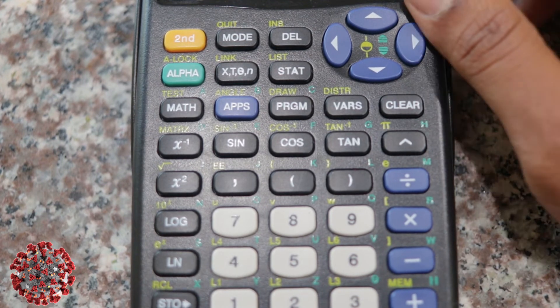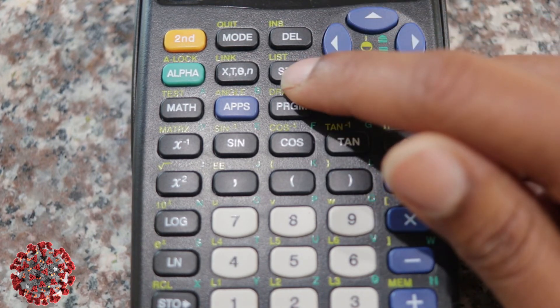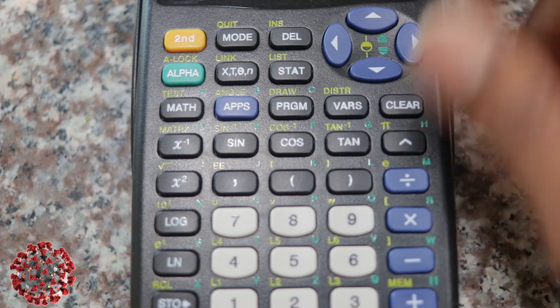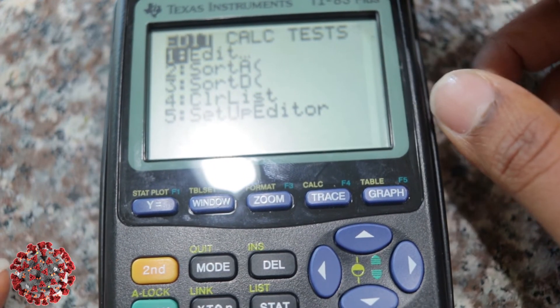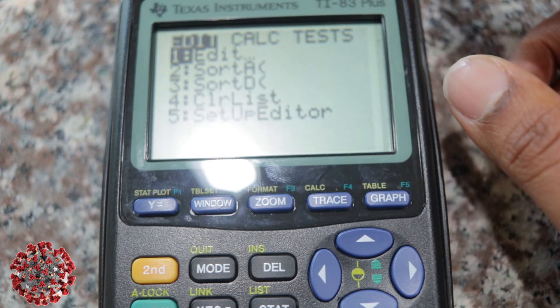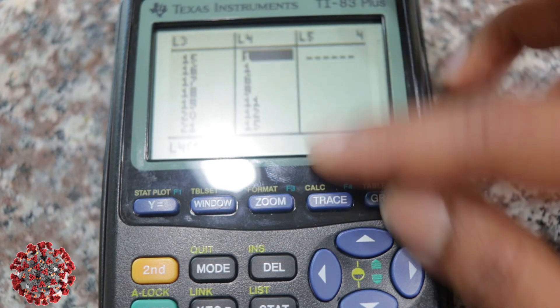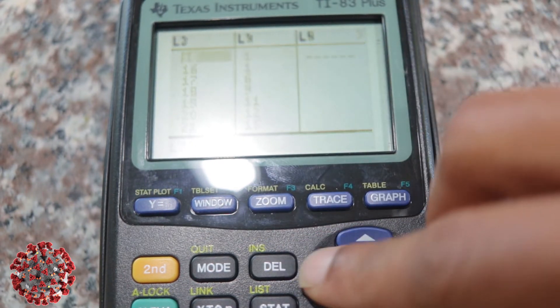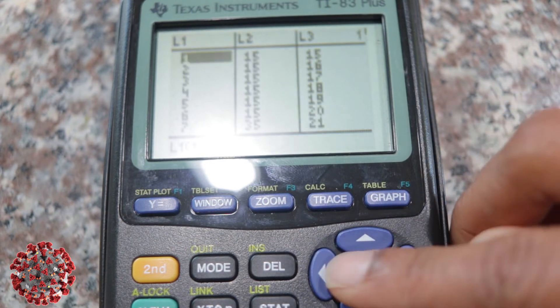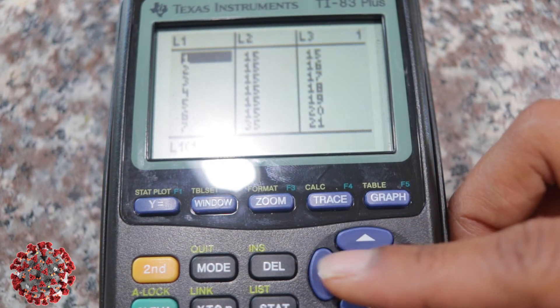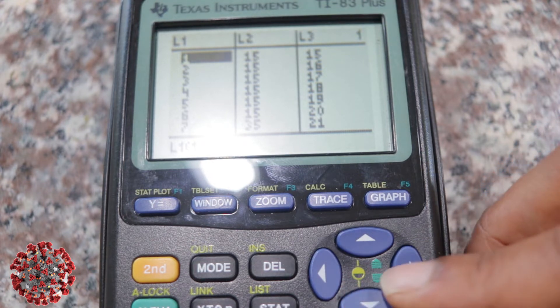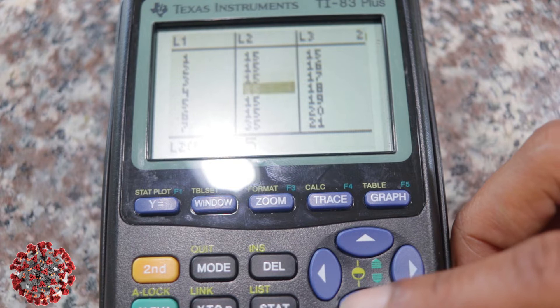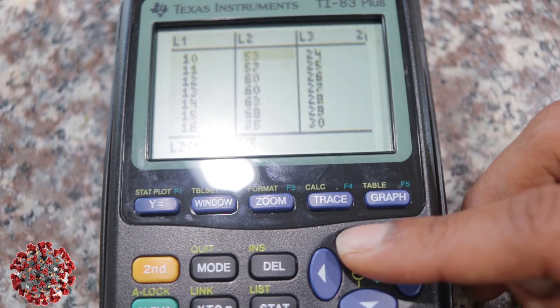Okay, so to start off in the calculator, the first thing you want to do is go to STAT. When you go to STAT, it's going to show a screen that looks like this. And you want to go to number one, which is EDIT. So number one is EDIT, and then what you want to do is list all of the data points in your first two lists. So I have L1 and L2. So L1 is just the days of 1 through 40, and then L2 is all the number of cases. So just what I showed you in the spreadsheet, I put them in the calculator.